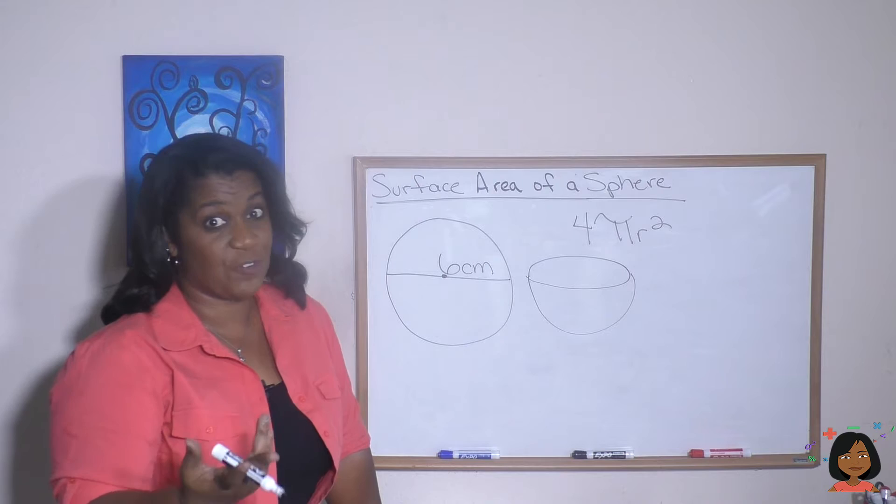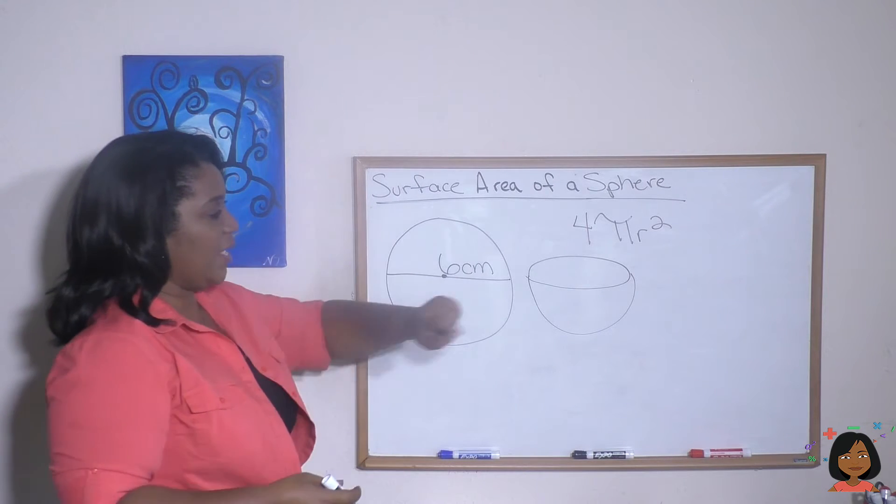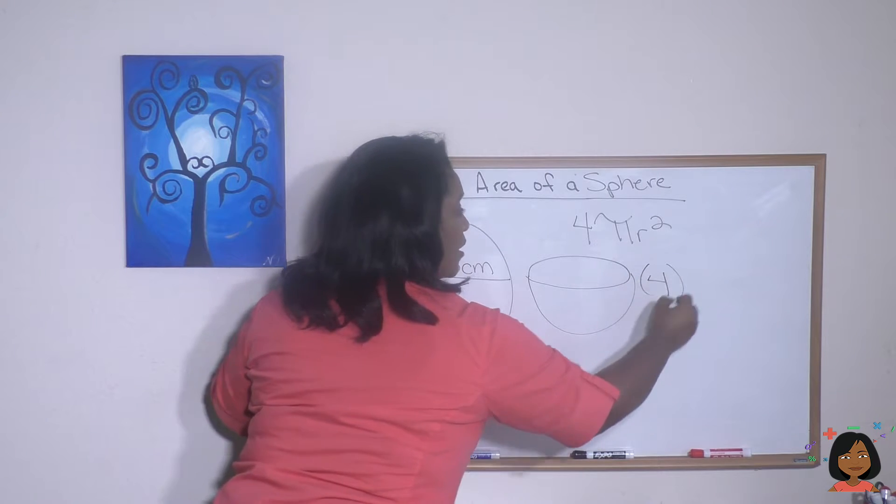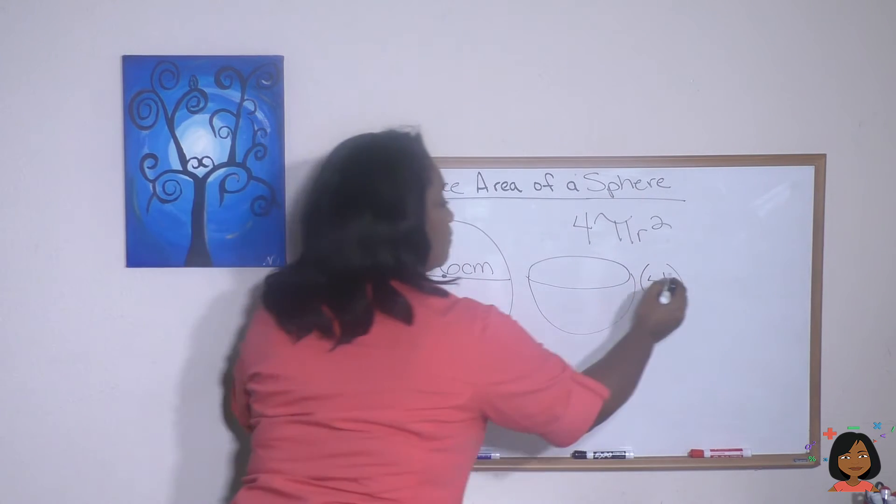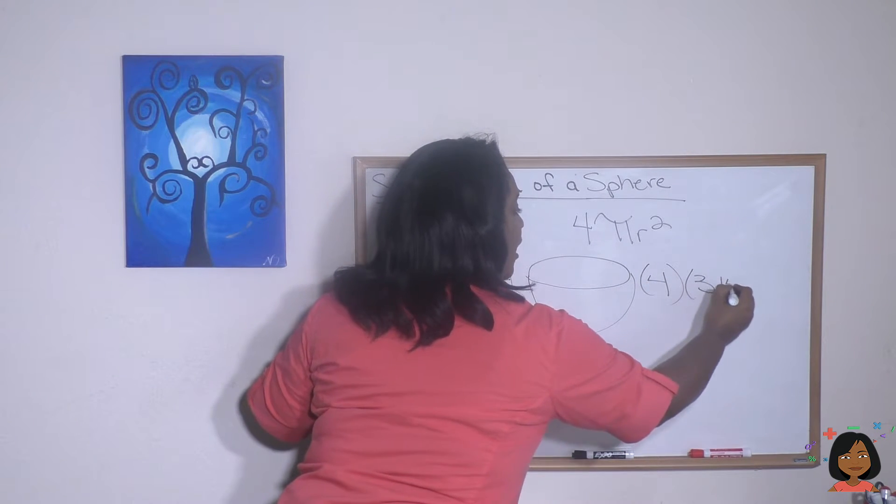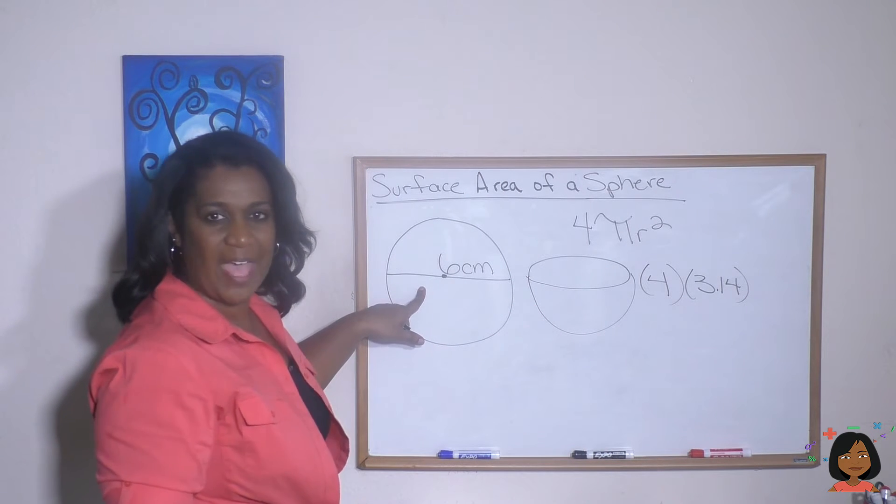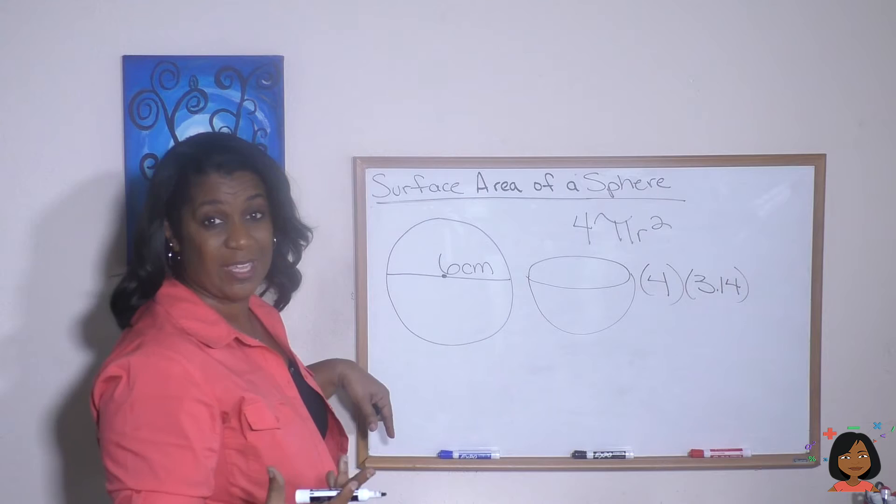Okay, here we go. We've got four times pi, which is 3.14, times the radius squared. Well, we have a diameter. We cut it in half and we get the radius, which is 3.